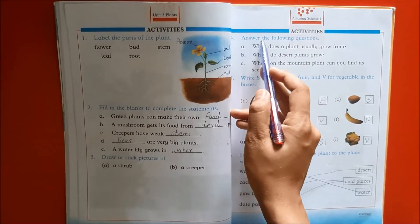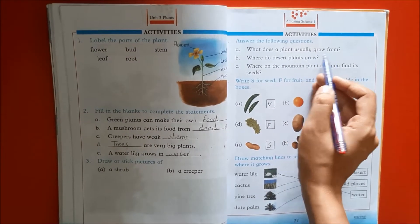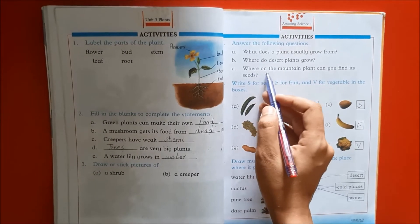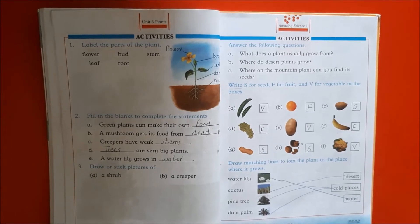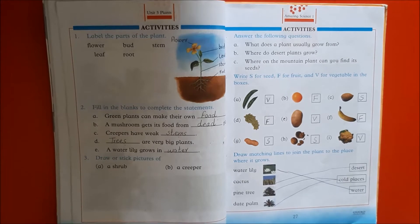Next question number 4, answer the following questions. Where does a plant usually grow from? Where do desert plants grow? Where on the mountain plant can we find its seeds? These questions are given on your notes, so you should learn the questions from your notes.